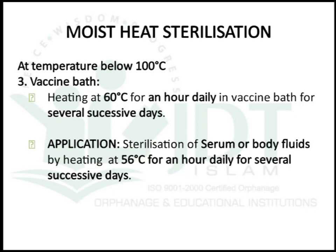The third method is the waterbath method, done by heating at 60°C for half an hour daily in a waterbath for several successive days. This method is mainly used for sterilization of serum or body fluids by heating at 56°C for half an hour daily for several successive days.